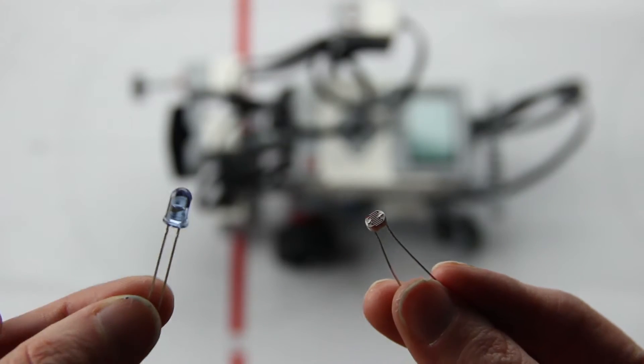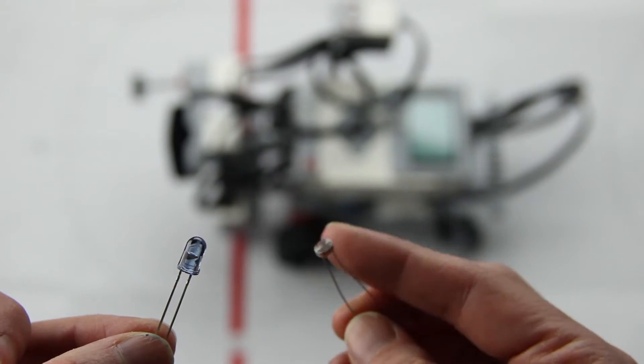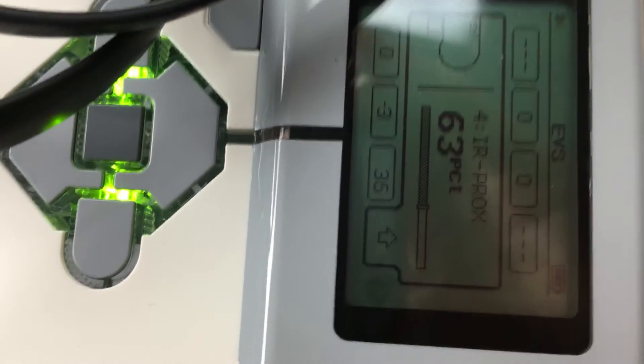An emitter might be similar to an IR LED or a collector would be like this photo cell. The sensor can tell the robot's proximity to an object. The closer an object is, the more light is reflected into the sensor.